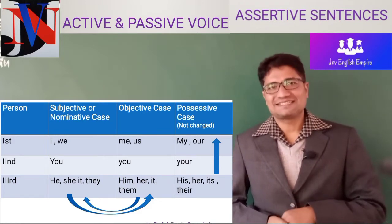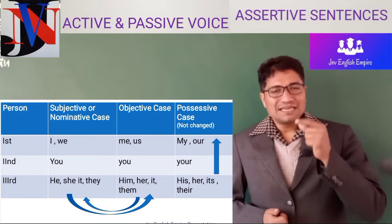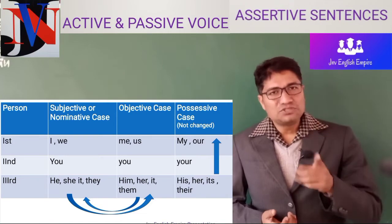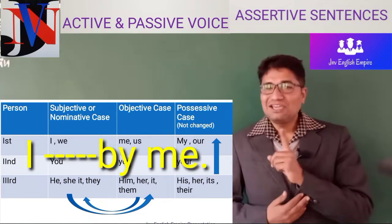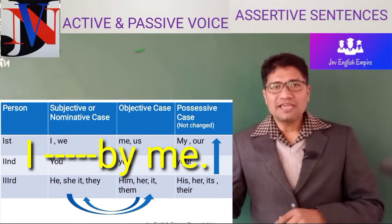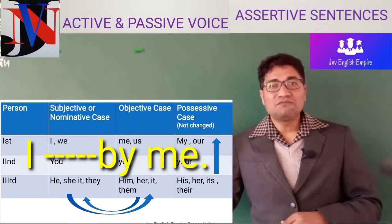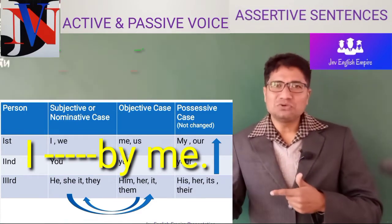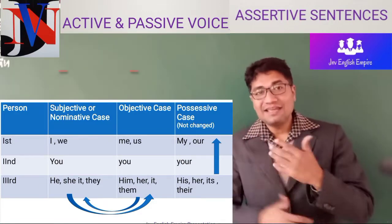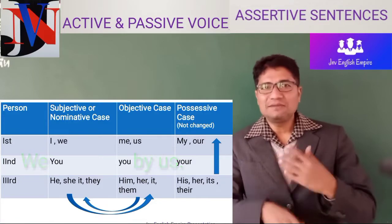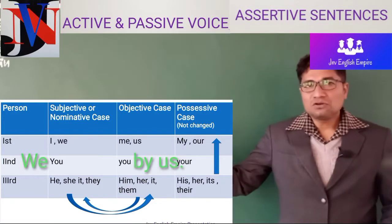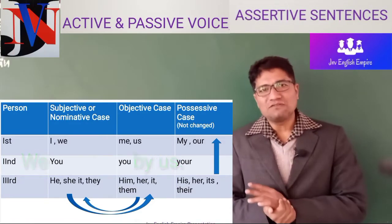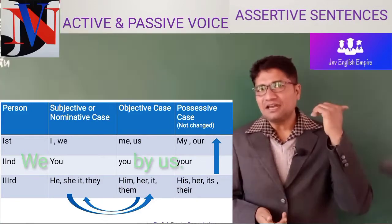How are you going to change the cases? If a case is used as a subject, that is a subjective case; where it is at the place of object, that would be an objective case. If 'I' is in the beginning — 'I am teaching you' — its passive voice will have 'by me.' Suppose 'you are playing football' — that is 'by you'; 'you' will not be changed. If 'we are learning mathematics,' then 'we' will be changed into 'by us,' because that is taken at the place of object — that will be an objective case.